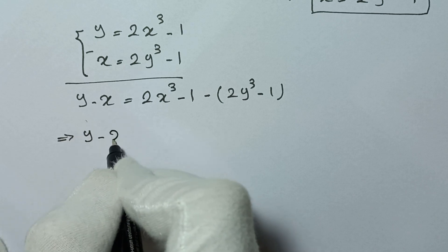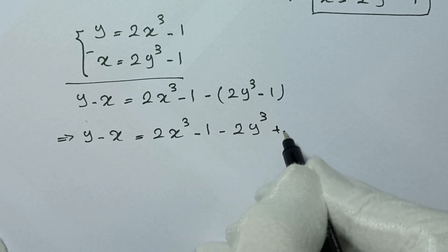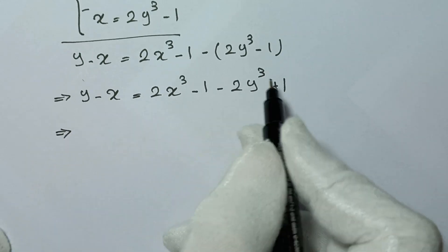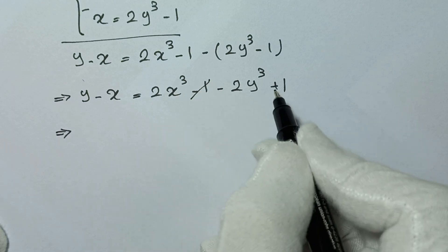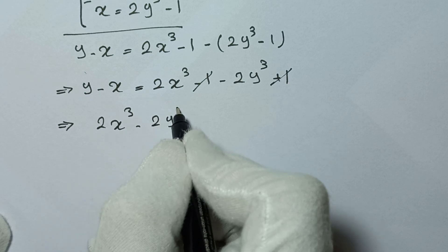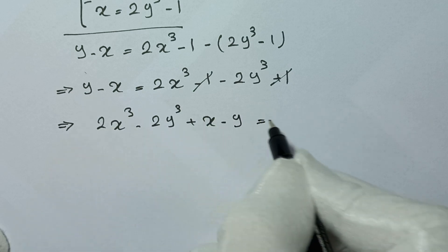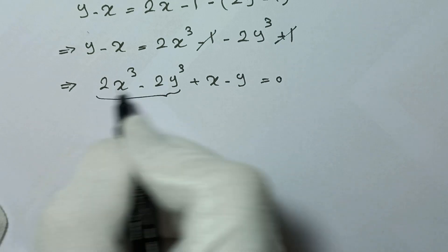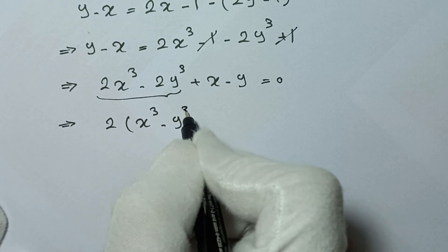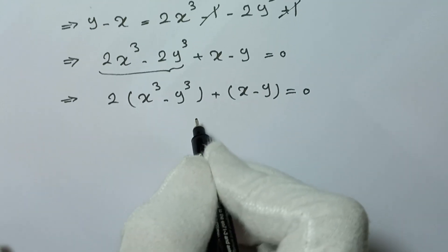Subtracting gives: y minus x equals (2x³ minus 1) minus (2y³ minus 1). This simplifies to y minus x equals 2x³ minus 2y³. The negative 1 and positive 1 cancel. Rearranging, we get 2x³ minus 2y³ plus x minus y equals 0. Factoring out 2 from the first part gives 2(x³ minus y³) plus (x minus y) equals 0.